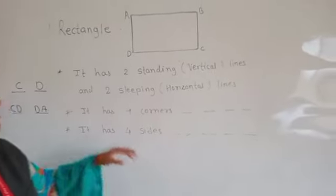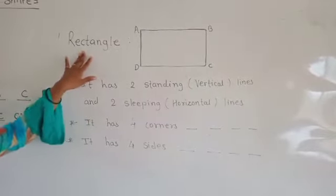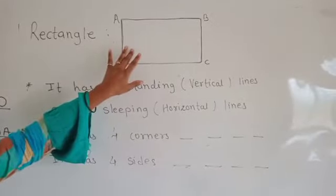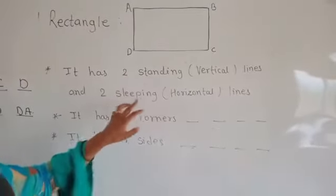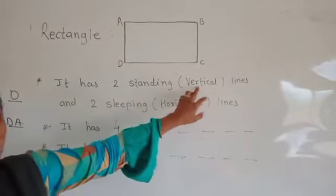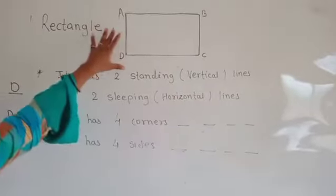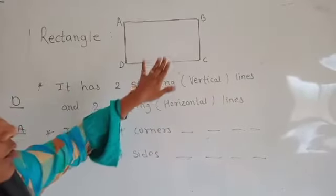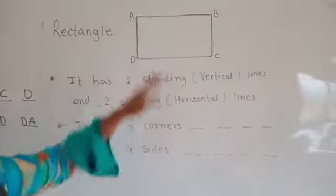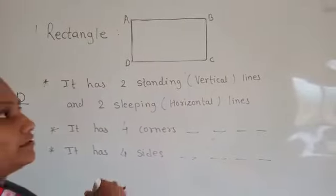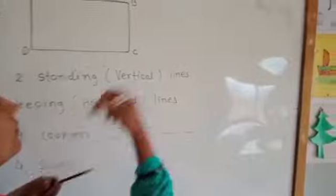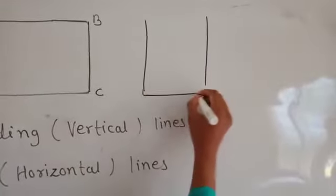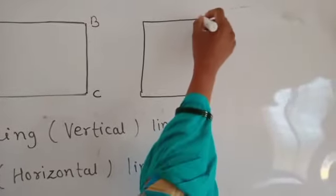Now moving further, we are going to another shape — the rectangle. This is a rectangle. A rectangle is made from two standing lines and two slipping lines. Standing lines means vertical lines; slipping lines means horizontal lines. For a rectangle we need two standing lines and two slipping lines.